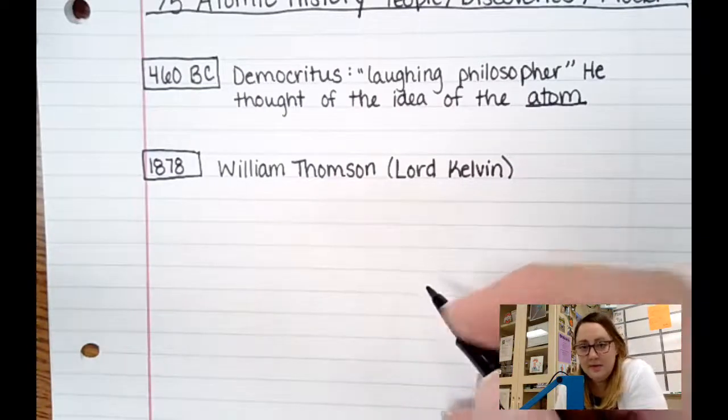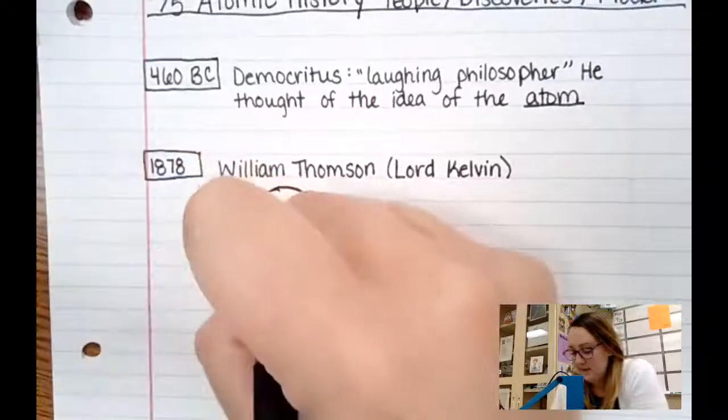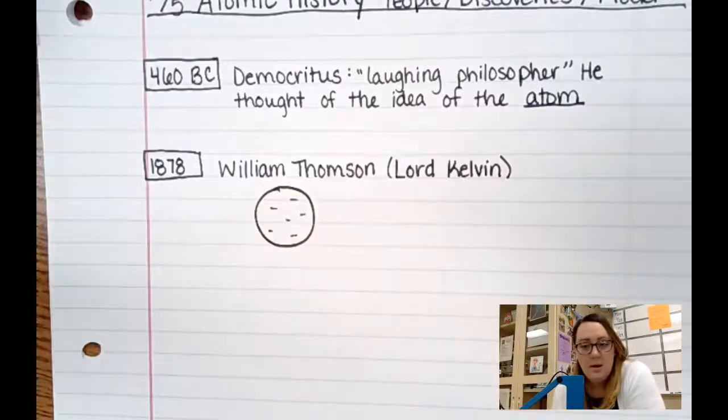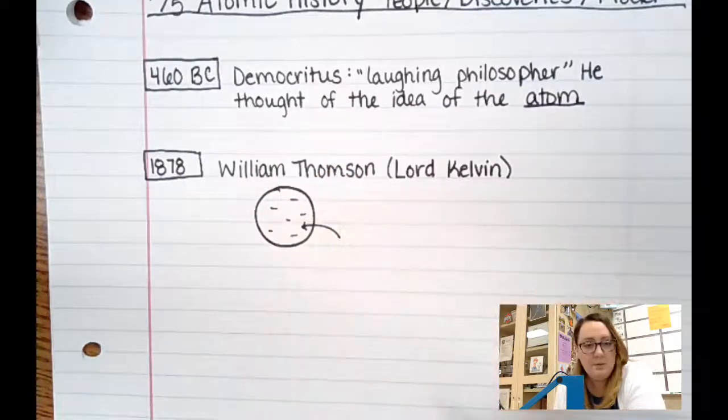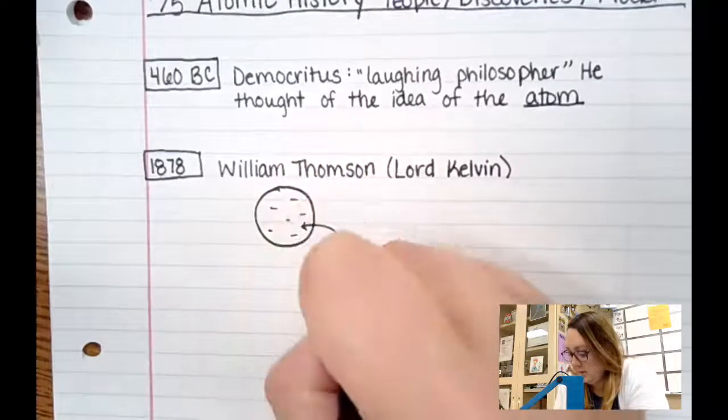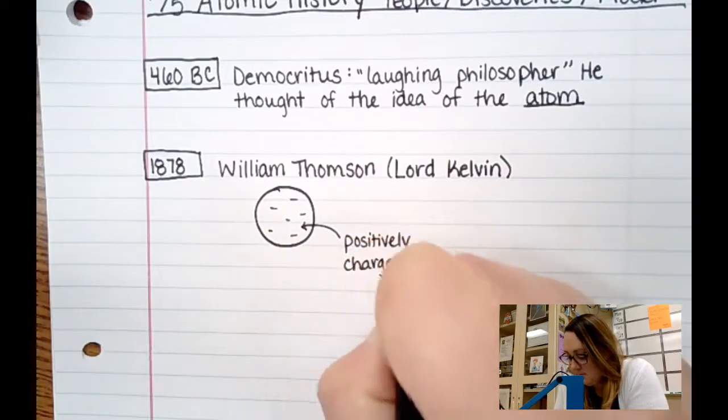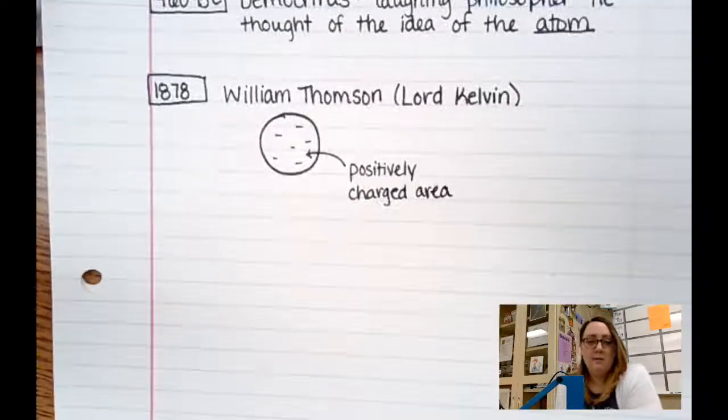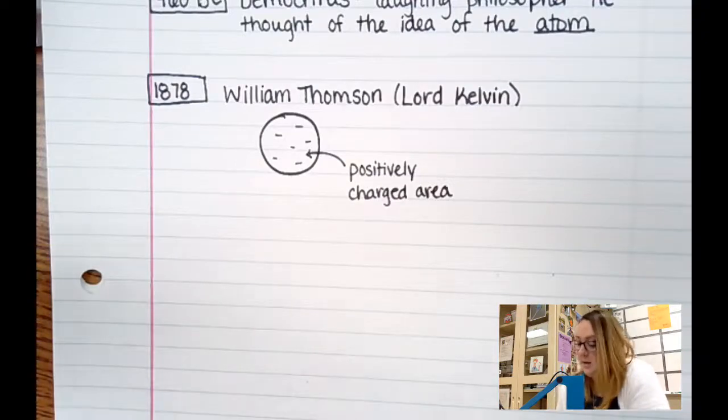He came up with this idea that the atom is mostly empty space and has these like negative charges in it. And then he knew the atom overall was neutral. So if it has these negative charges, it would have like a positively charged area. So this model, he decided I got to pick a name for this. Everybody's going to learn about this. So I'm going to name it after a famous dessert. And so he decides that plum pudding, it's what he's going to name this model.